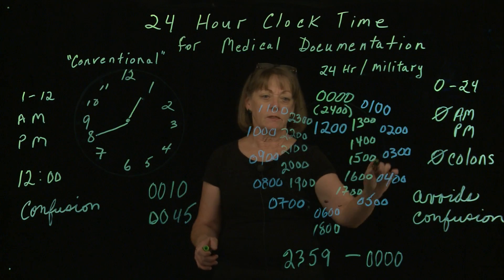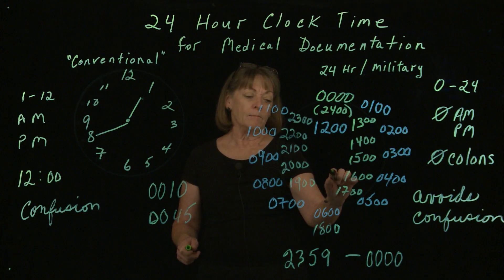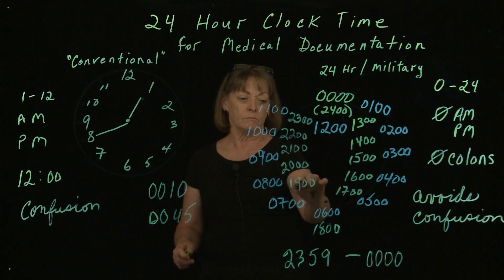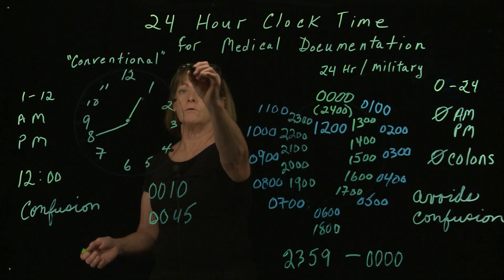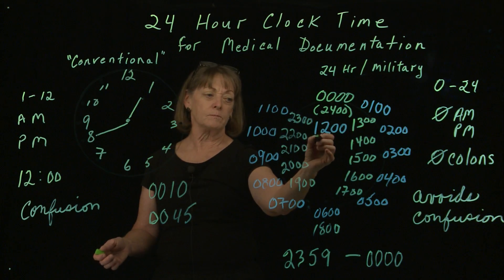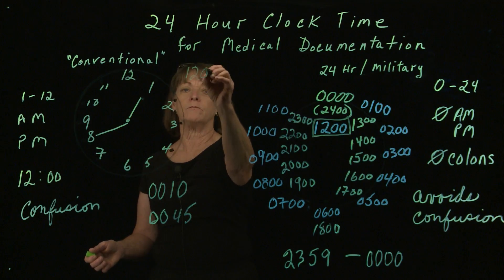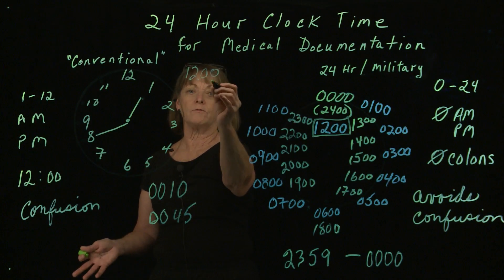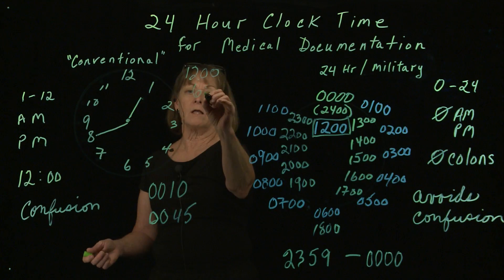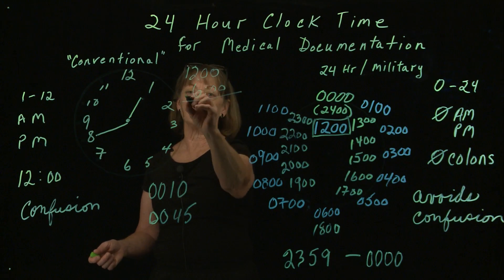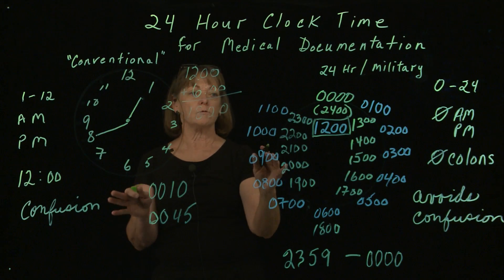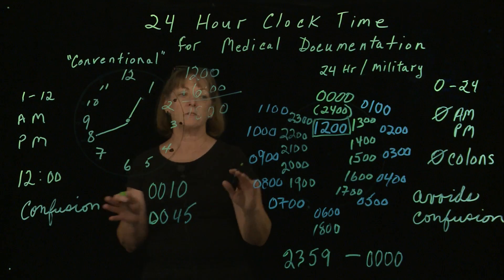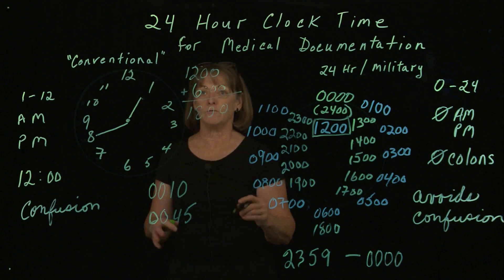An easy way to help you remember how to figure out PM times is that once you get past noon, all you need to do is take noon and add. So you have 12 noon — let's say you want to figure out what six o'clock PM is. You simply add and you have 1800 hours. You just do that for all of your times. That was a simple way for me to learn it when I first learned this system.